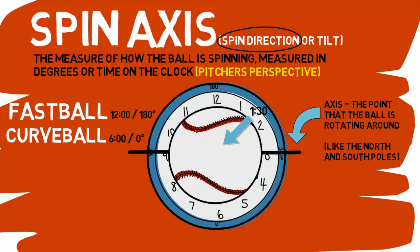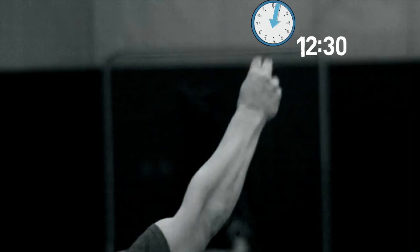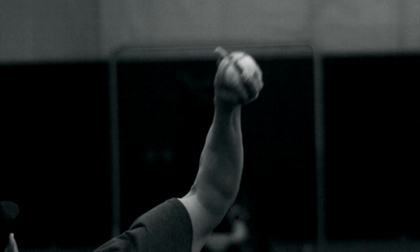I understand this may be a complicated idea to grasp, so let's look at some edutronics footage to help fully explain this topic. If we freeze the video right at release, you can see that this pitch is spinning back towards the pitcher from the top of the ball. And if we overlay our clock, you can see this pitch has a spin axis of about 12:30. Hopefully this example helped shed light on what spin axis really looks like.